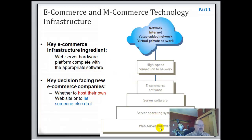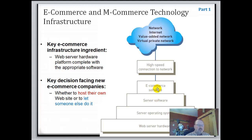That infrastructure includes hardware, server operating systems, and server software — things like Apache for web server software, MySQL database — and then some kind of special e-commerce software sitting on top of that providing a specific interface and data type, and then your connection out.